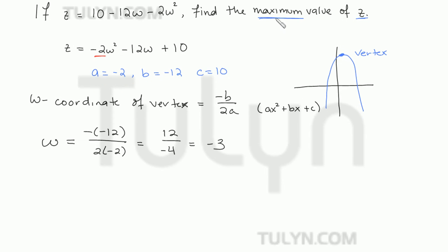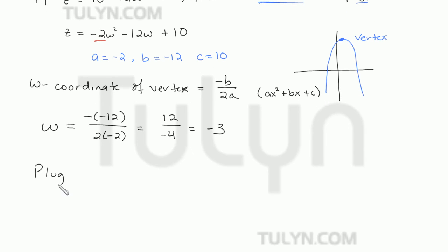But since we want the maximum value of z, what we need to do is plug in w equals negative 3 into our original equation so that we can find the z-coordinate for the vertex.